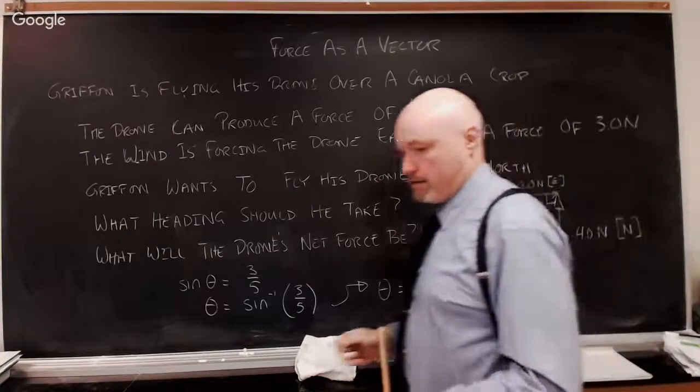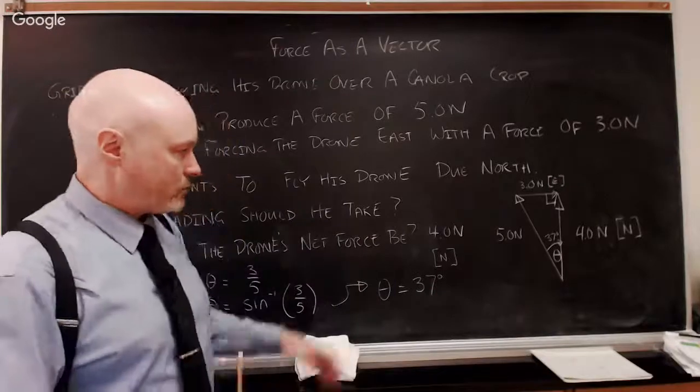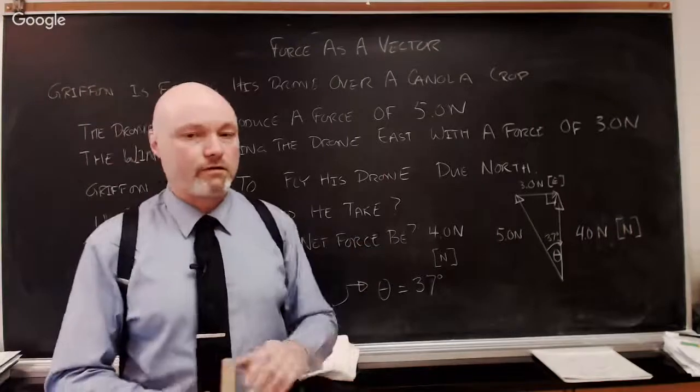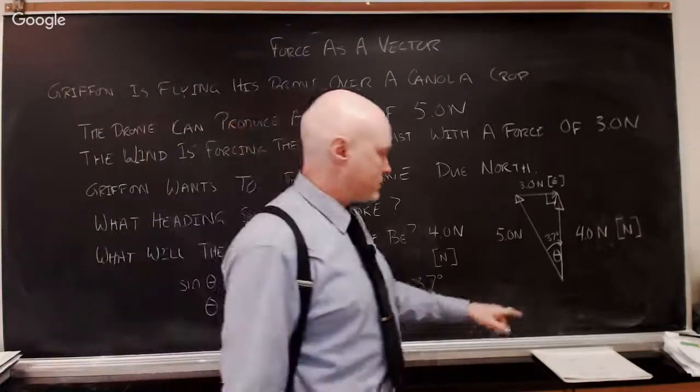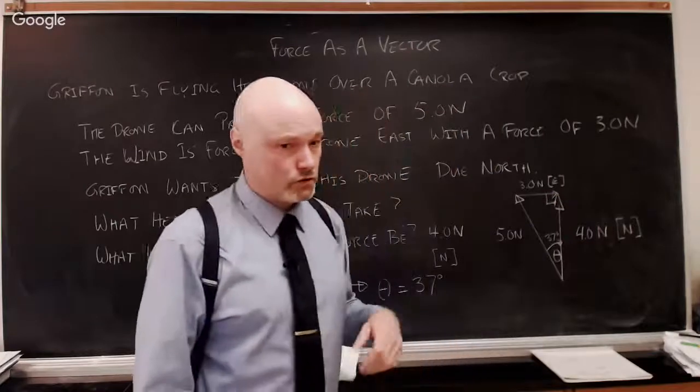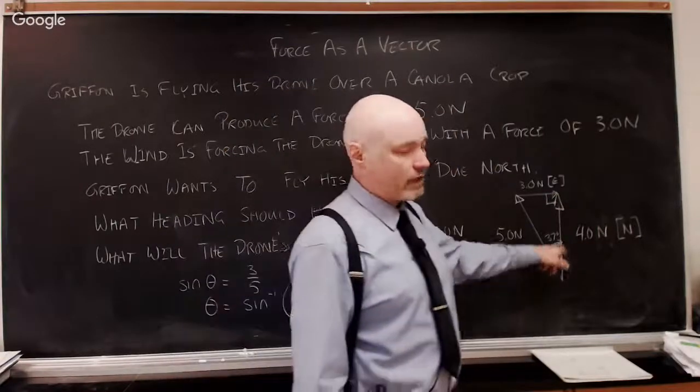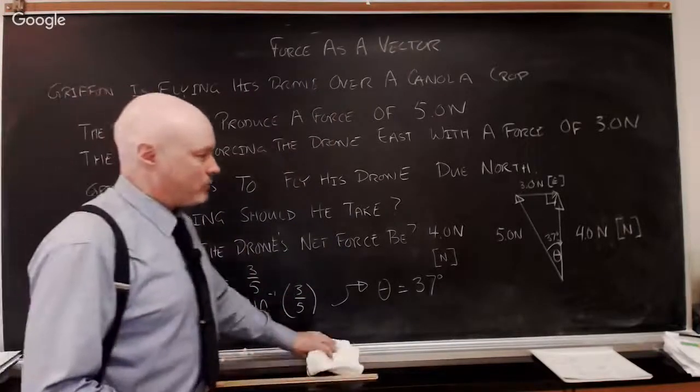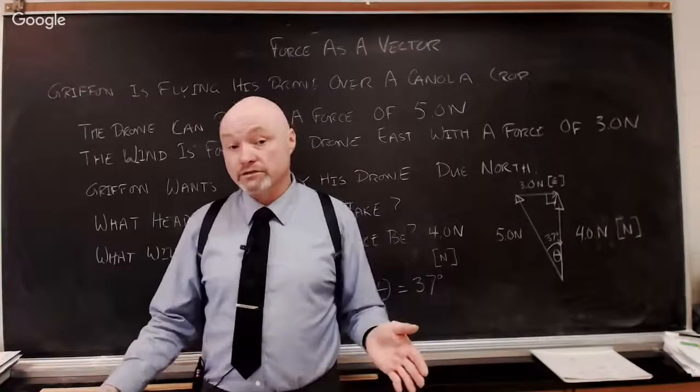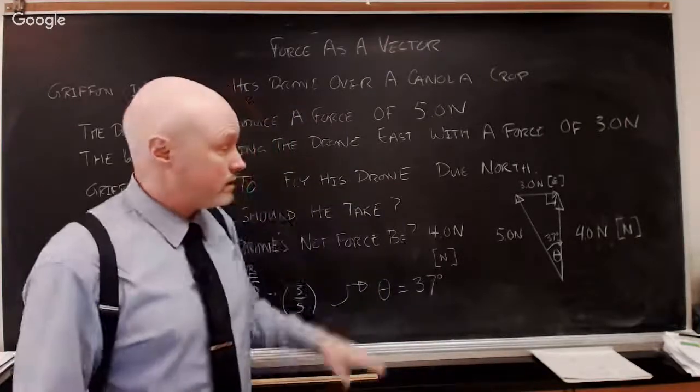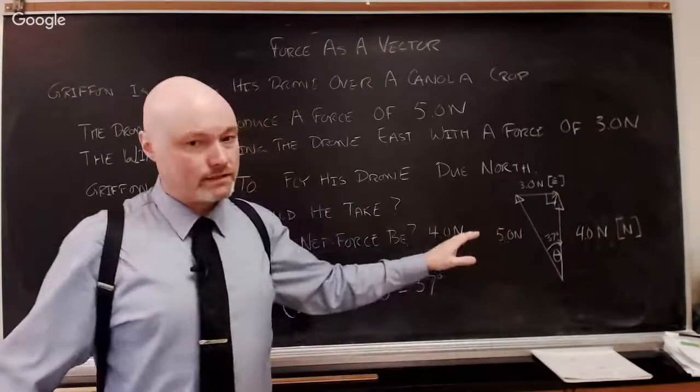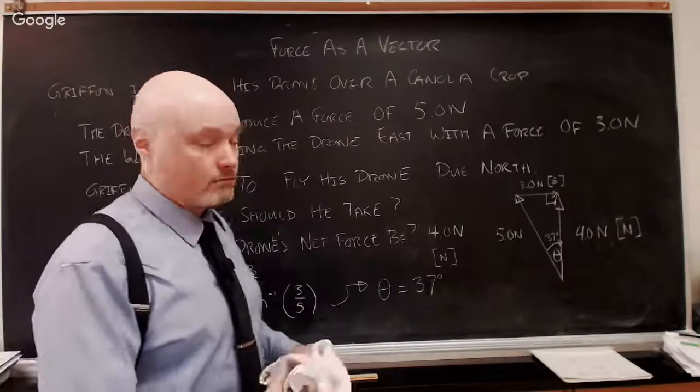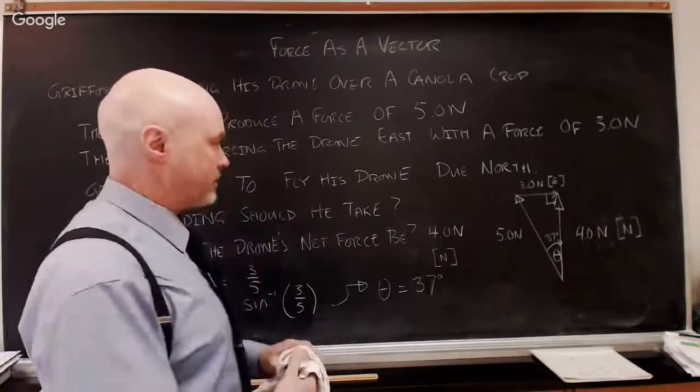So in this case, he's going to fly his drone with a force of 5 newtons, 37 degrees to the west of north, in order for his drone to provide a net force of 4 newtons directly north. And his drone will fly directly north when this is all done. So you'll notice that net force questions wind up just being triangle problems. This one was a nice easy SOHCAHTOA problem, but it could be a sine law or cosine law problem, or you could do a scale diagram.